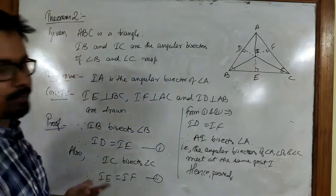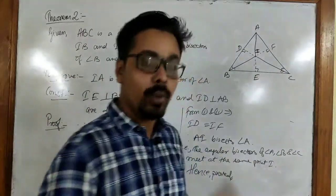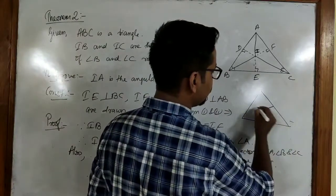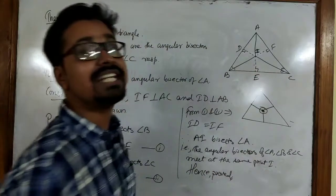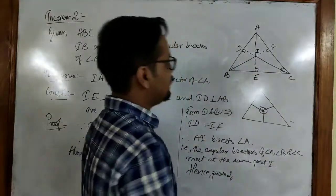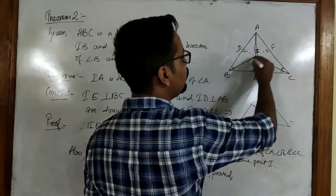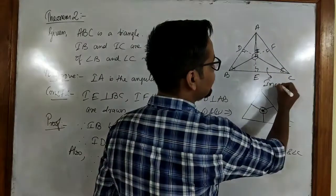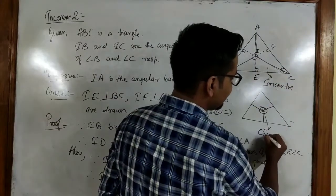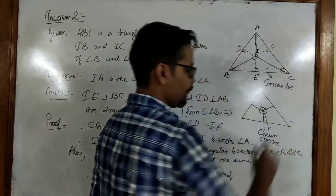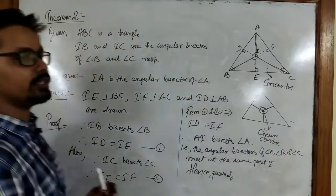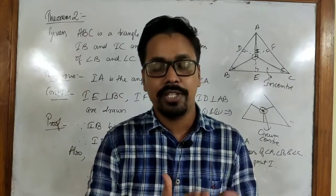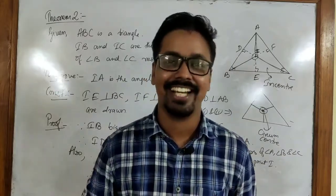Both proofs are really easy. One thing I forgot to mention in the previous one: the point where the perpendicular bisectors meet is called the circumcenter. And in this case, the point where all the angular bisectors meet is called the incenter. So this will be our incenter and this will be our circumcenter. That is about both the theorems. I hope you understood this video. If you have any query, ask me in the app or on WhatsApp. Thank you everyone for watching, and until next time, cheers.